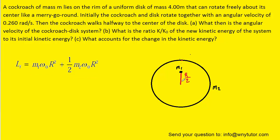Now, after the cockroach walks towards the center of the disk, we'll notice that the distance from the cockroach to the center will now be half of the radius. So, when we set up the final angular momentum, we'll have to make sure to cut this radius in half.